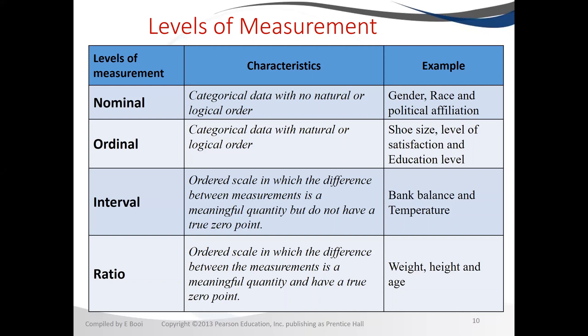Today we're going to talk about levels of measurement. This builds up from understanding the types of variables. Your types of variables are just characteristics that describe your population or your sample. When you collect those kinds of variables, there are observations that you pick up, and those observations have measurement levels or scales of measurement. There are four types of measurement levels: nominal, ordinal, interval, and ratio.